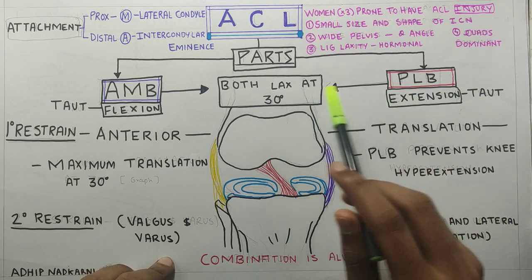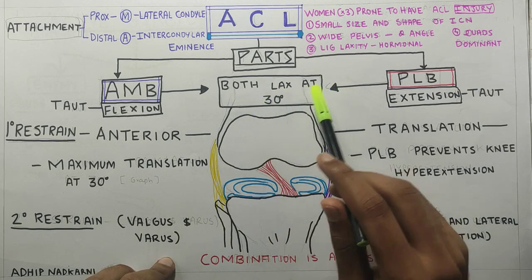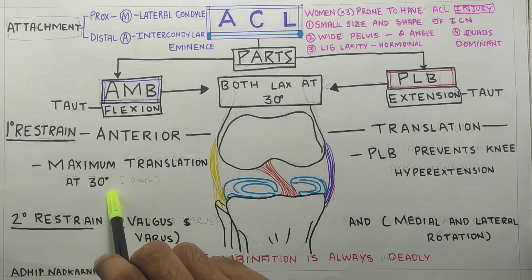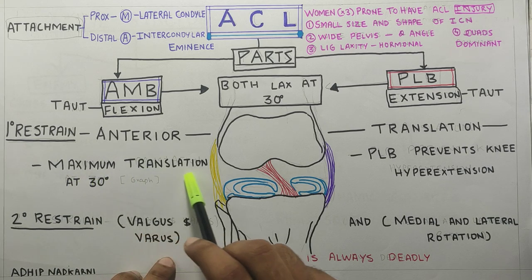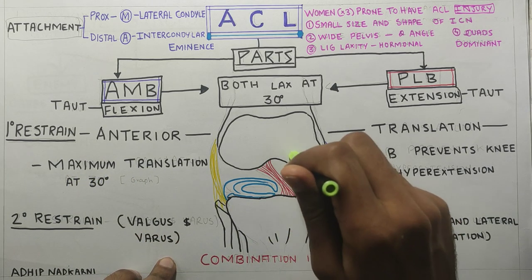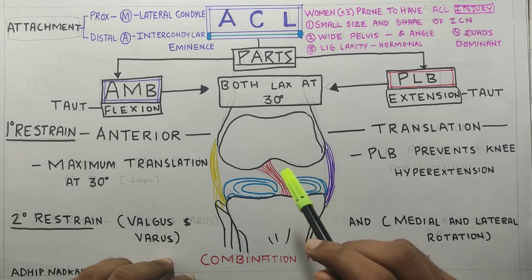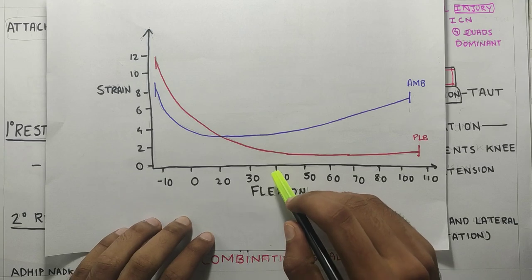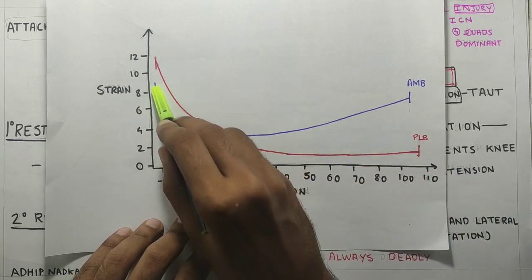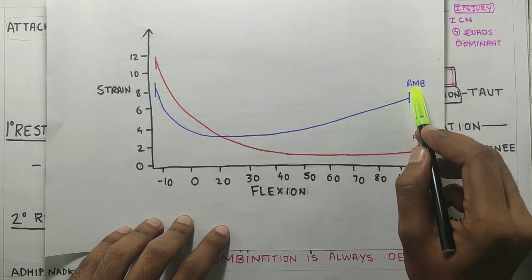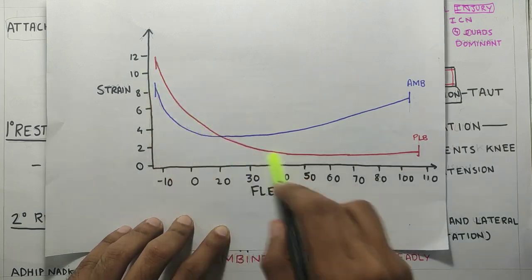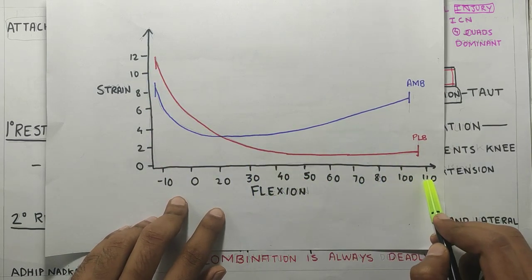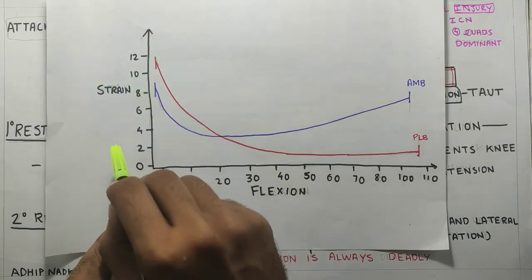Both the ligaments are comparatively lax at 30 degrees of knee flexion, and at 30 degrees of knee flexion there is maximum anterior translation of tibia on the femur. To demonstrate this, there is a graph which I will show you. In this graph, you can see that the purple line is the anterior medial band and the red one is the posterior lateral band. This axis is the degree of flexion and this is the amount of strain on the ligament.